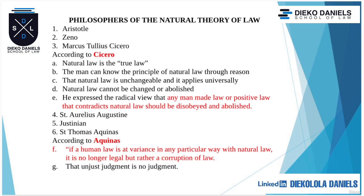Natural law cannot be changed or abolished. The same principle — that you should not kill a person, just as God punished Cain for killing Abel — is the same thing we are talking about now. Cicero expressed a radical view: any man-made law or positive law that contradicts natural law should be disobeyed and abolished. We will discuss this further in our cases on natural law.